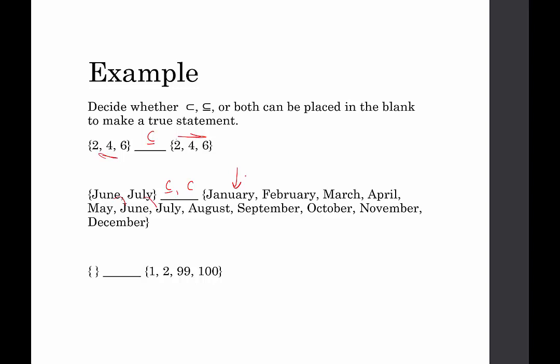And the last one, we have the empty set. And is the empty set a subset of the set containing {1, 2, 99, 100}? It is. It is a subset, because anything that's in here, which is nothing, I can find here. I mean, there's nothing there, so there's nothing to find. And it's a proper subset, because I see something here that's not in the empty set. So it's a subset, and it's a proper subset.